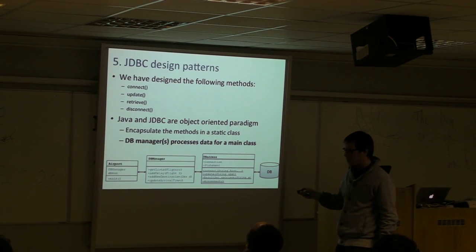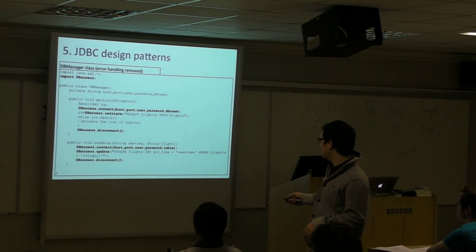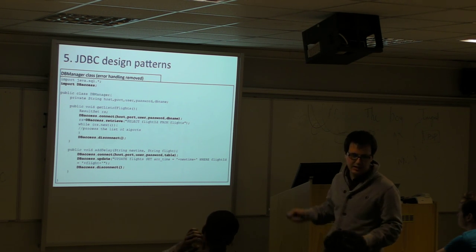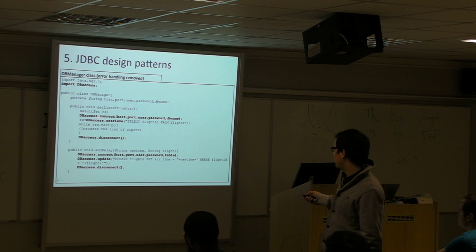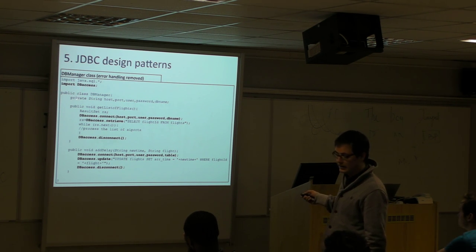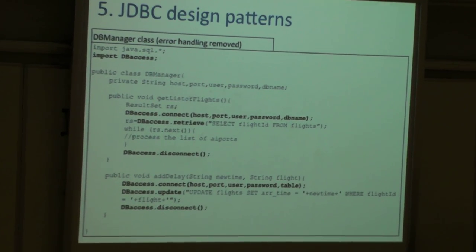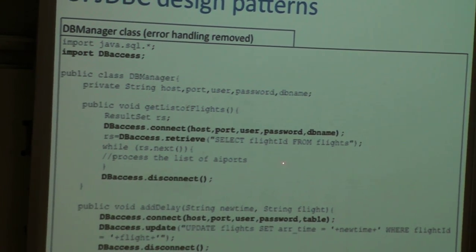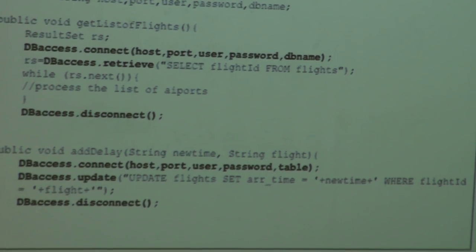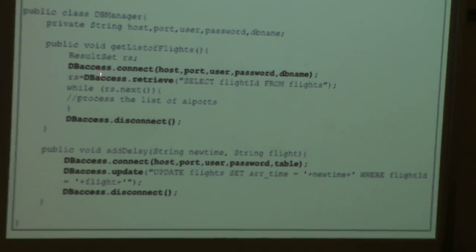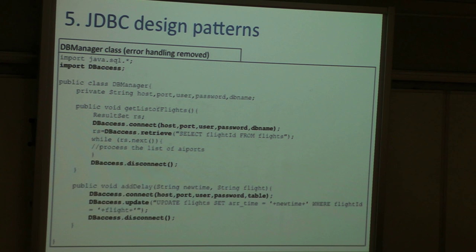How does the database manager look? This is up to you depending on the requirements in your application. The database manager will define different methods. We want to get the list of flights or add a delay. How do we deal with this static class? First, we have to import the class, make a reference to it. Then it's easy - we connect given the proper host, user, password according to our requirements, then we retrieve according to the SQL sentence we define, then disconnect. We connect, update, disconnect, no matter which method we are designing. We always make use of these three classes. Don't forget about the rest.